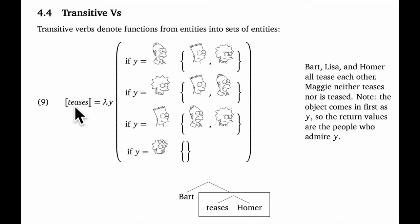So let's look at teases. It starts with lambda y, that's the open slot for the direct object meaning. When that comes in, we do a sort of lookup. So for example, if Homer is the incoming argument, then the return value is the set containing Bart and Lisa. That's the set of people who tease Homer.